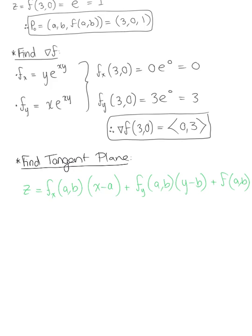And plugging in everything we just found we have z is equal to 0 multiplied by x minus 3 plus 3 multiplied by y minus 0 plus 1.